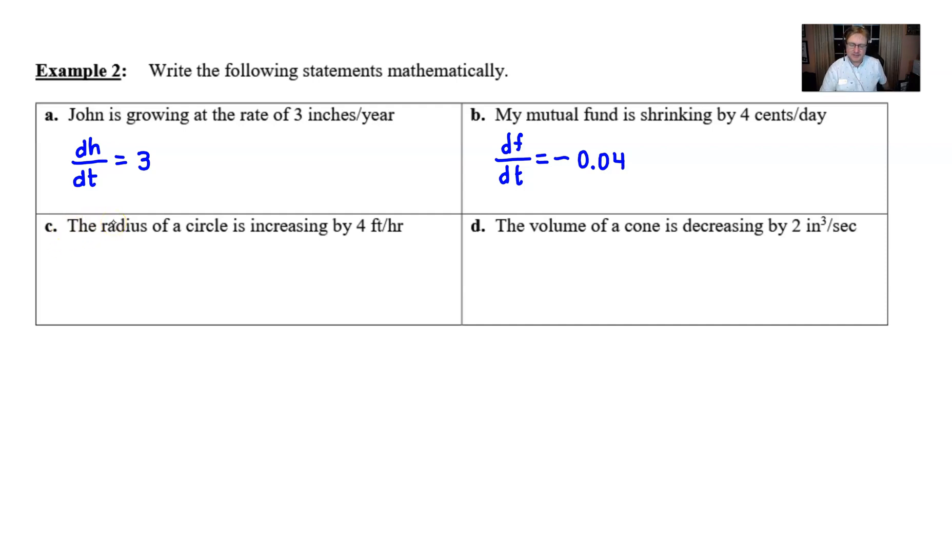The radius of a circle increasing by 4. We're going to say the derivative of r, that makes a lot of sense, r for radius, with respect to t, and because we're increasing, we have a positive 4.